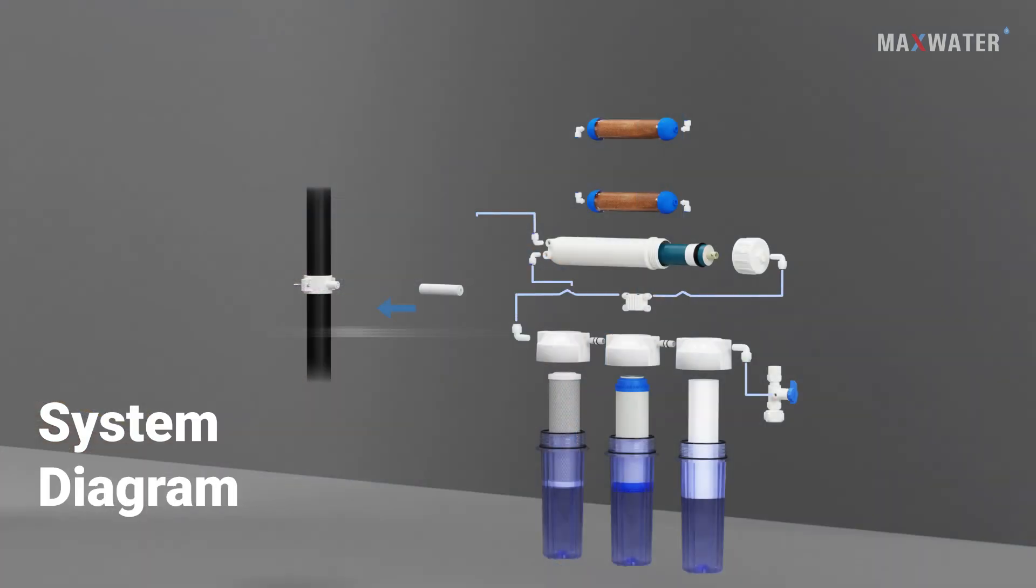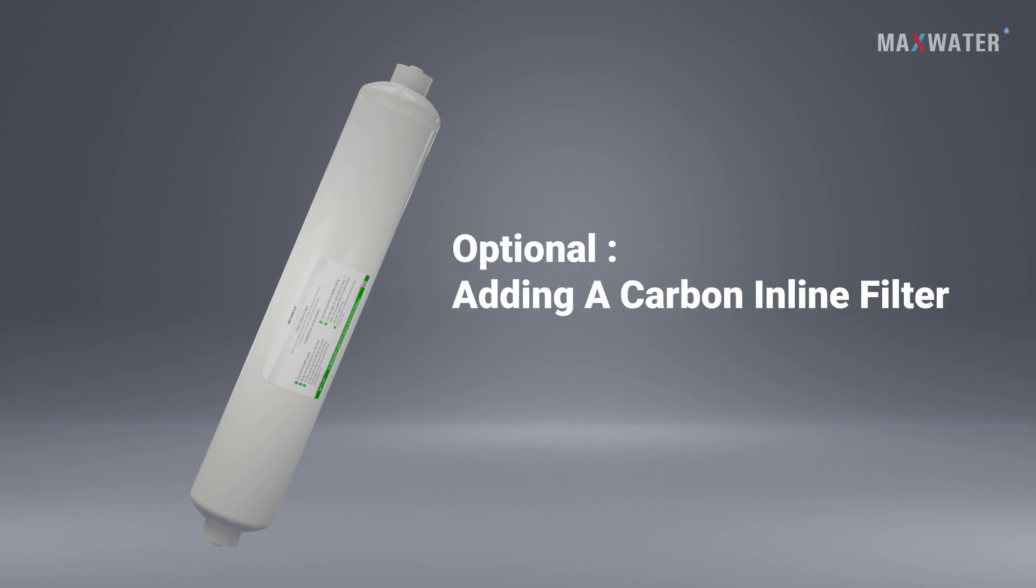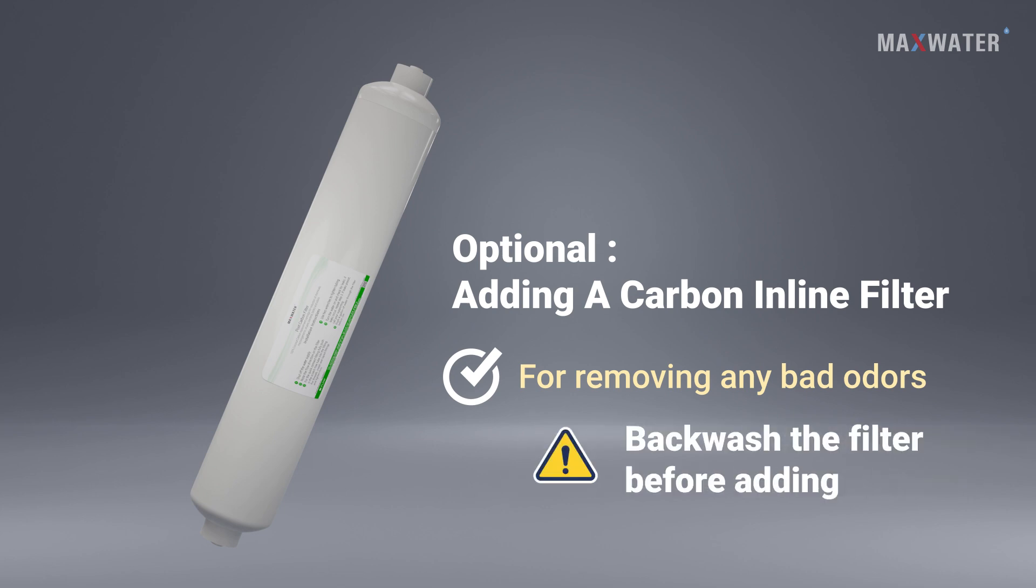Your system setup should look something like this. Your last filter may vary depending if you add an inline carbon or not. Adding a carbon inline filter is optional in case you want to remove any bad odor from your water. In order to add one, we have to backwash the filter before adding it to our system.